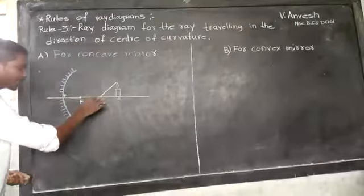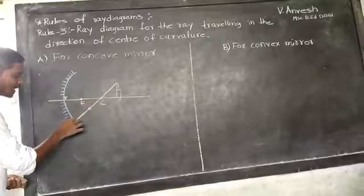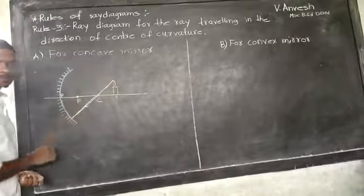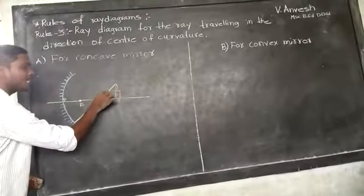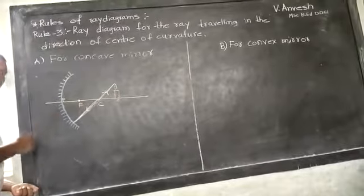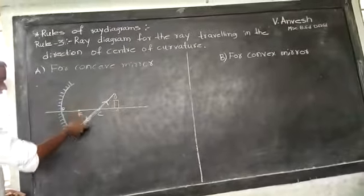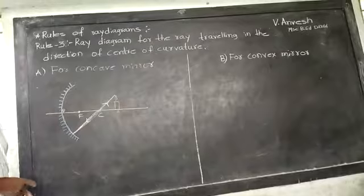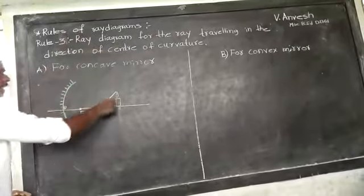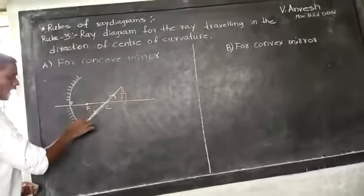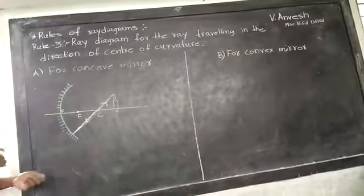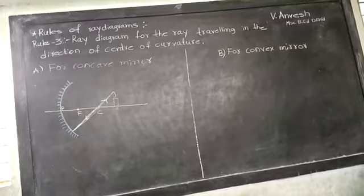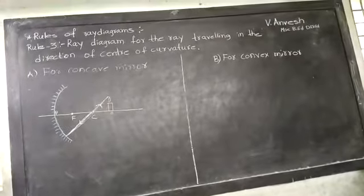And it gets reflected back. It gets reflected. The incident ray is, after meeting the concave mirror, get reflected back.